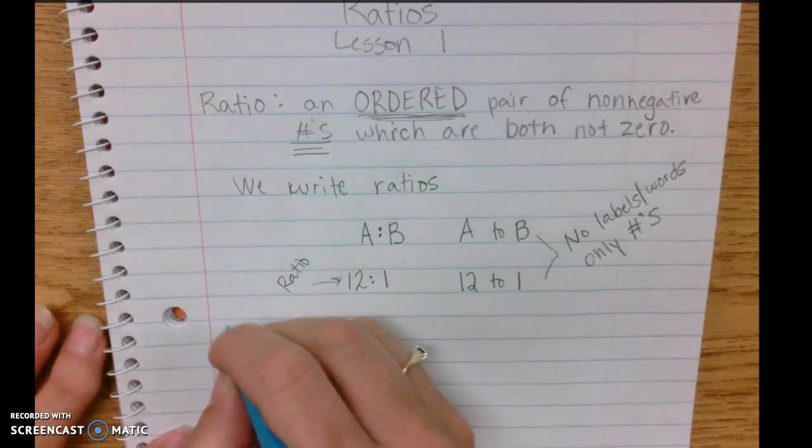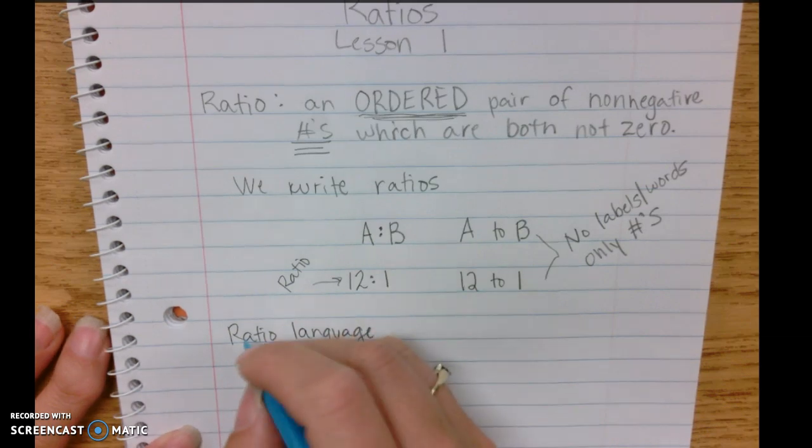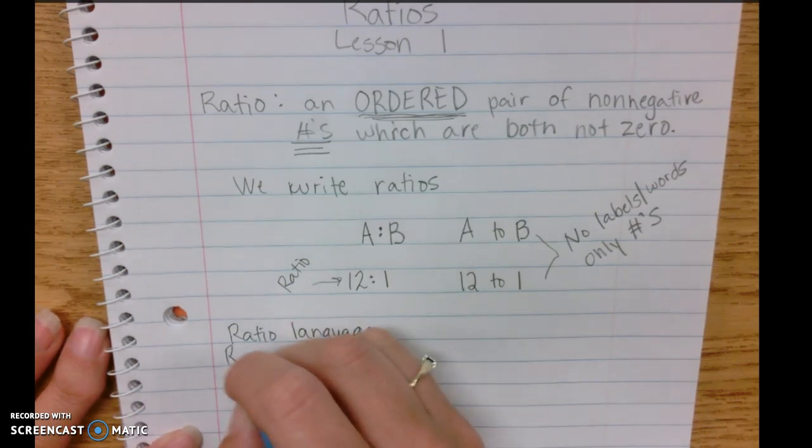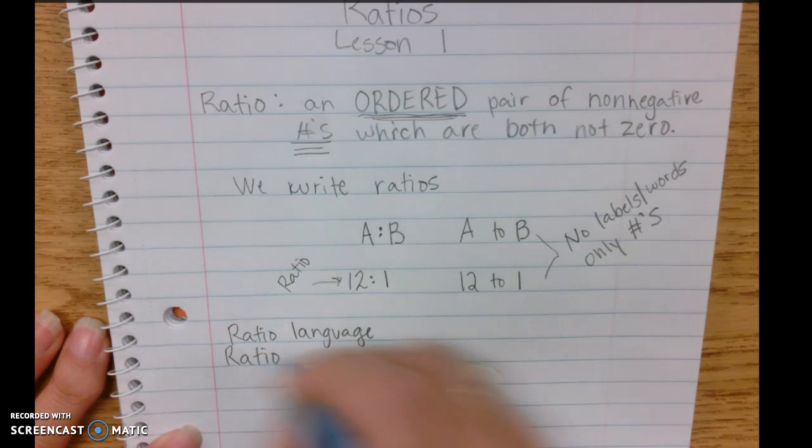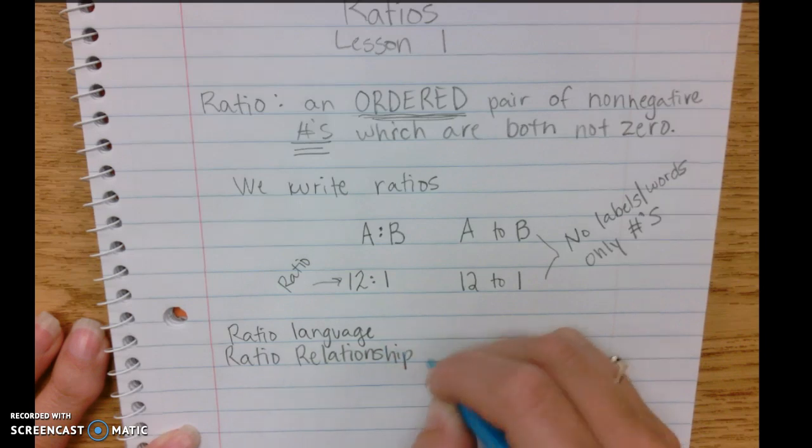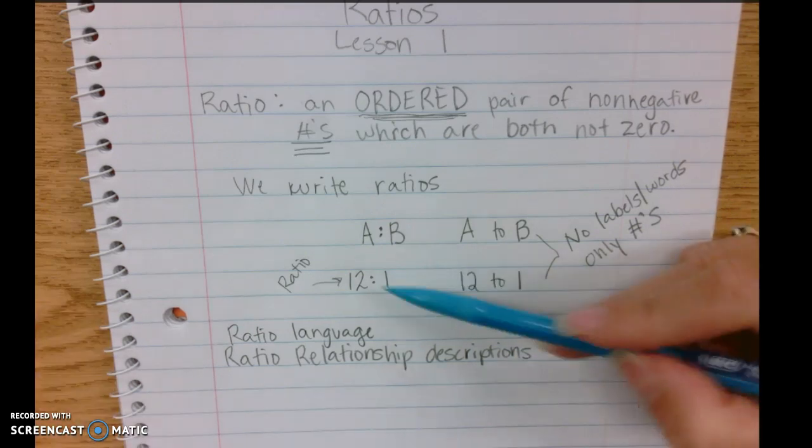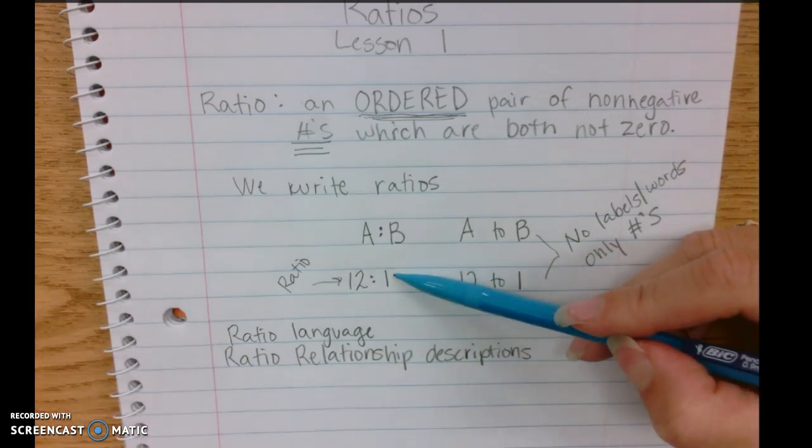When we are describing what these mean, that's called ratio language or ratio relationship descriptions. It's kind of a mouthful: ratio relationship descriptions.